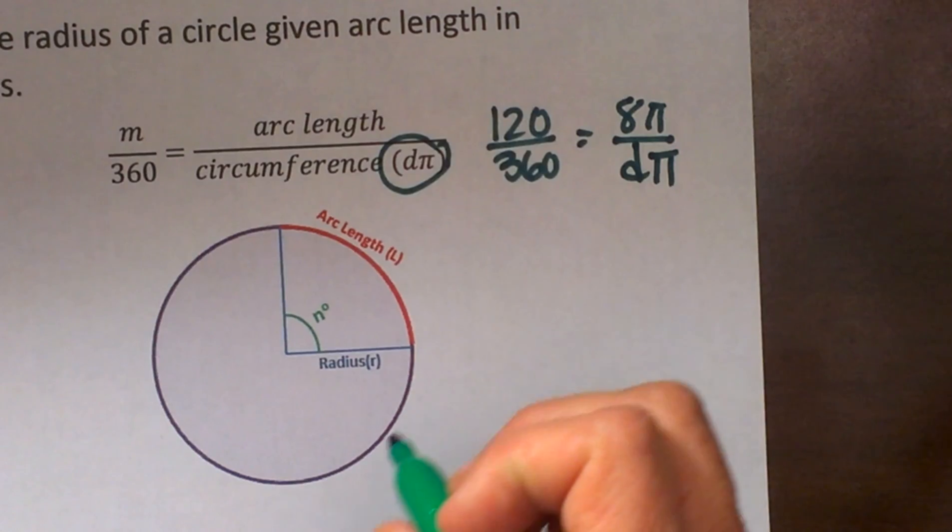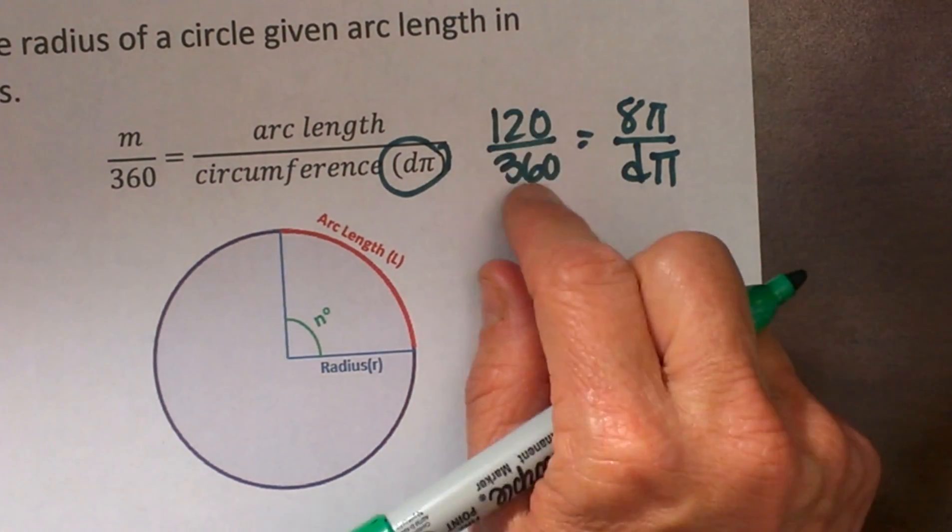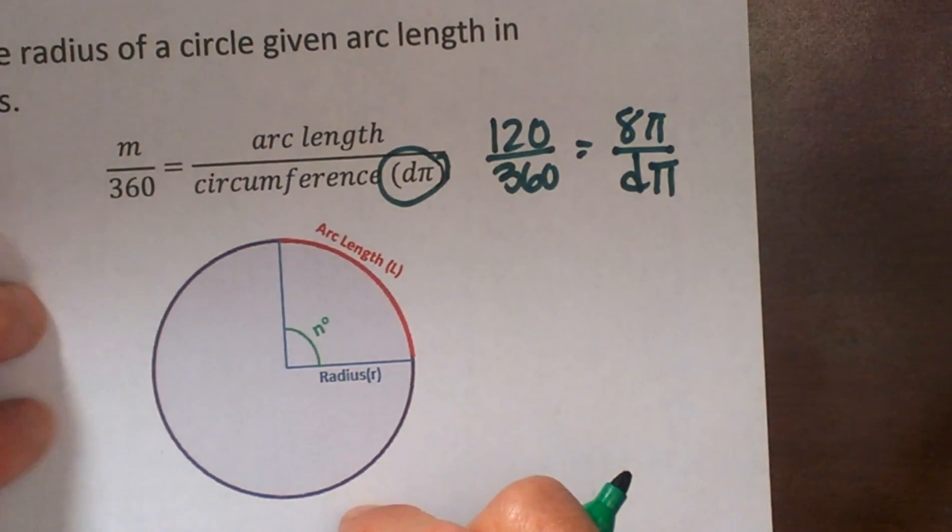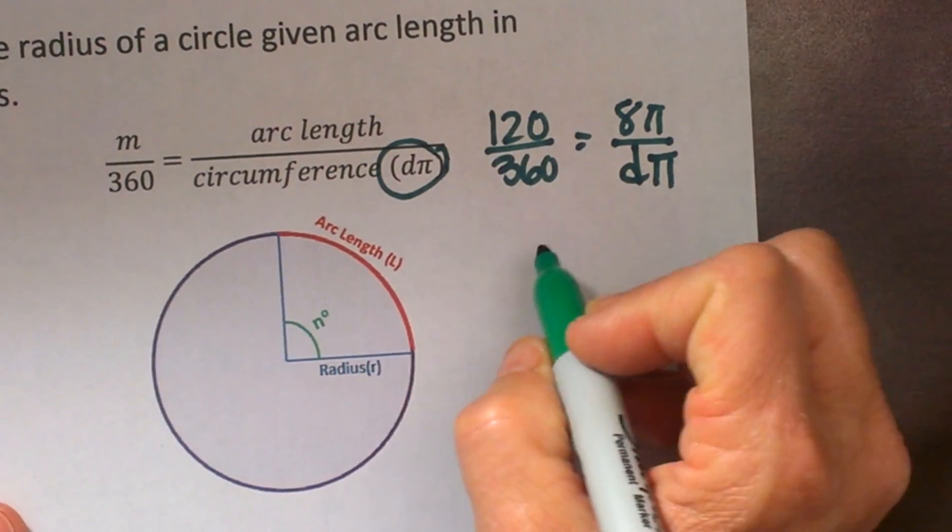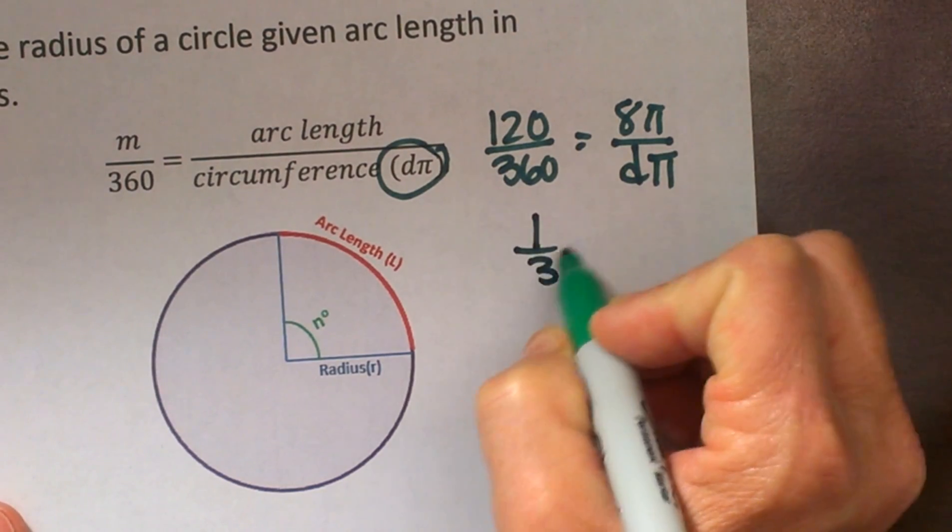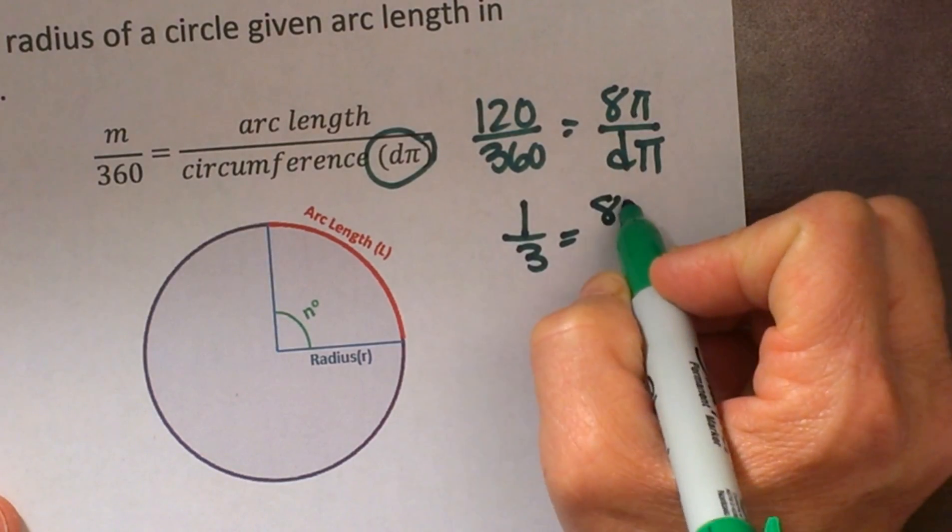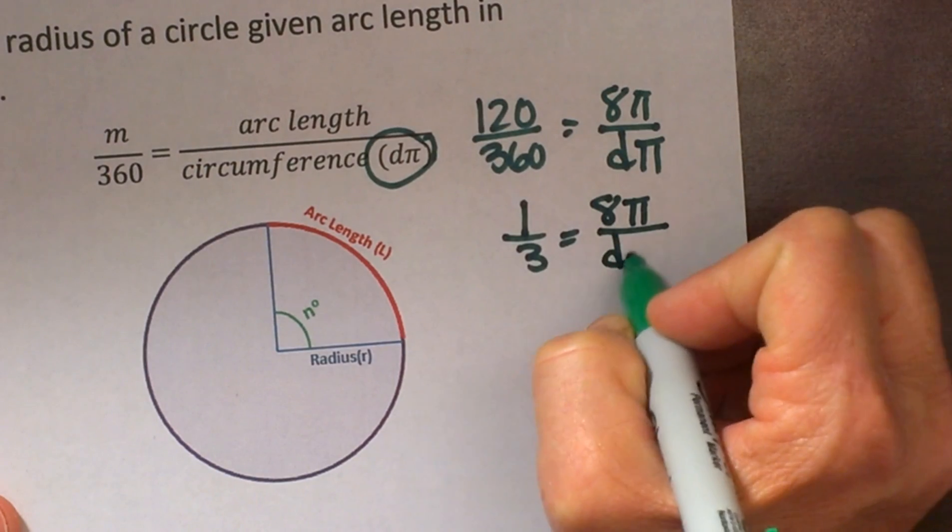Now it is pretty easy. I actually like to reduce this fraction if we can. And we can, 120 out of 360 is one third. It just simplifies to a third and that is 8π over dπ.